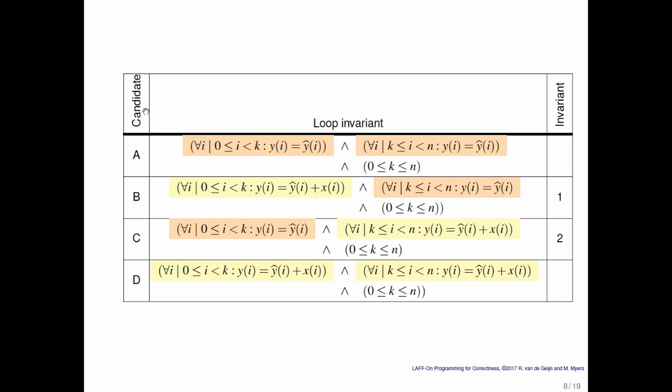And what have we done here? These are candidate loop invariants that we're going to discuss. Candidate A says that the first k entries are the original contents and the last k entries are the original contents. Probably not a very interesting loop invariant.